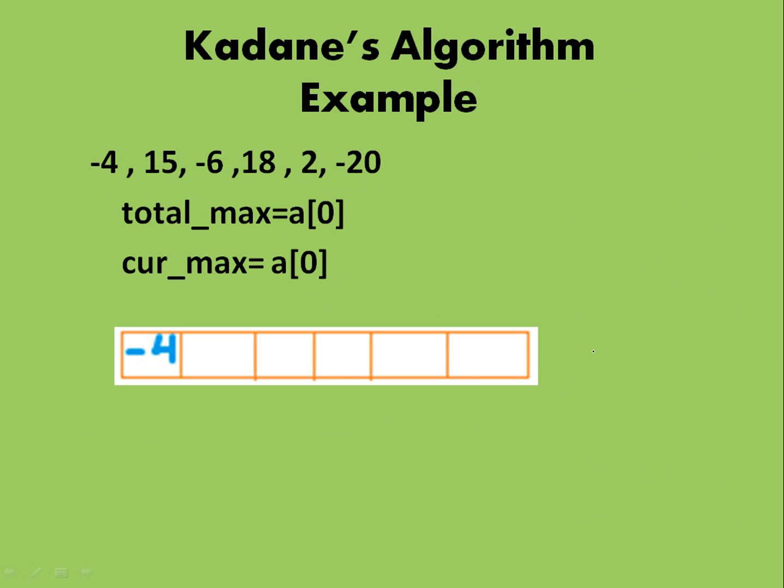So here is a more sophisticated algorithm which is Kadane's algorithm, and we have the same array as we used before. Let's name this array as a. So a0 is minus 4, a1 is 15, minus 6 and 18, 2 and minus 20.